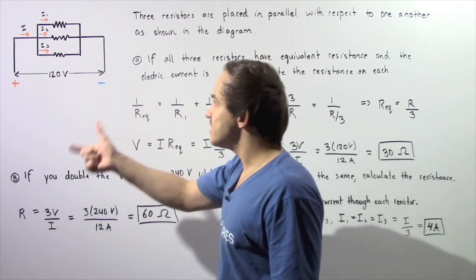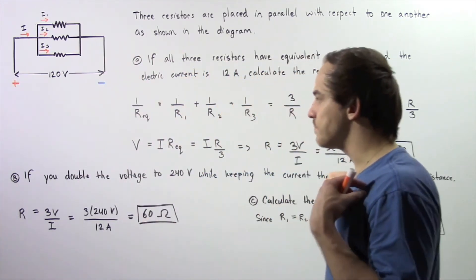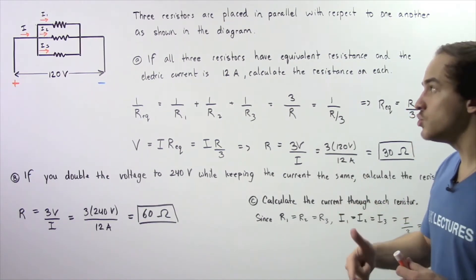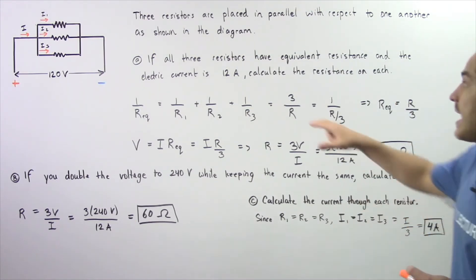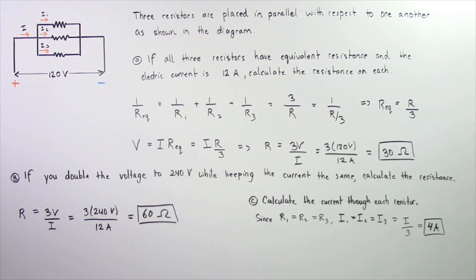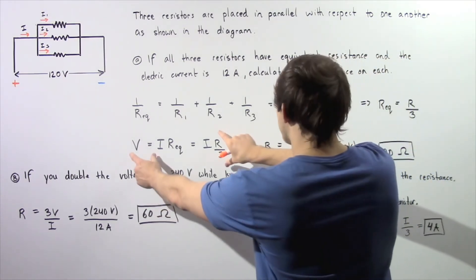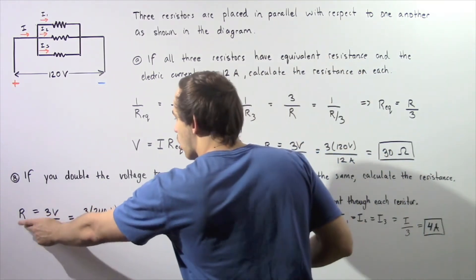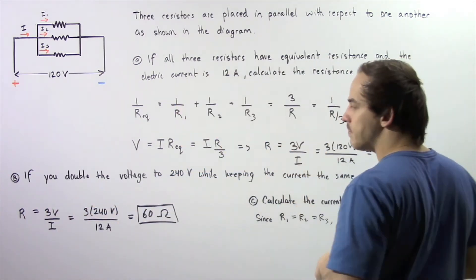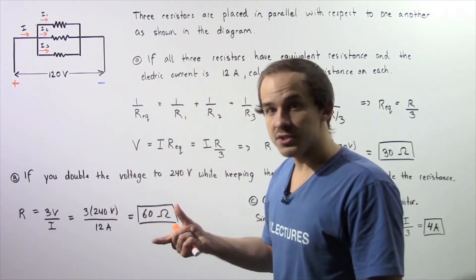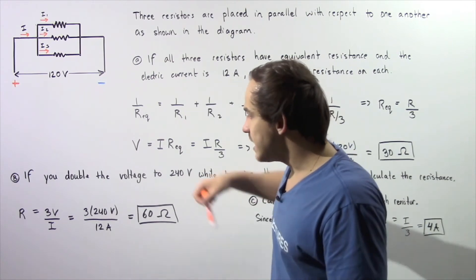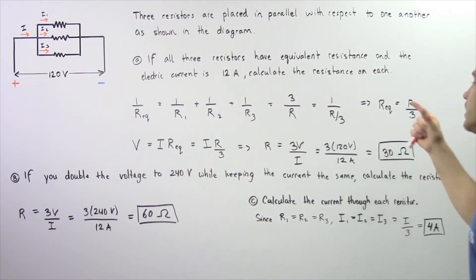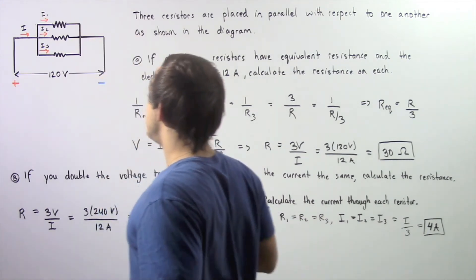So 30 ohms is the resistance on each one of these resistors, given our assumption that the resistance on each one is exactly the same. Now let's move on to part B. If you double the voltage from 120 to 240 volts while keeping the electric current the same at 12 amps, calculate what happens to our resistance. We apply the same equation: R is equal to three multiplied by V divided by I. The voltage becomes 240, I stays the same, so R is now equal to 60 ohms. If we double our voltage, we essentially double the resistance of each one of these resistors.